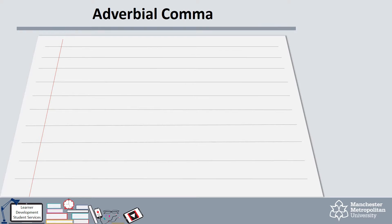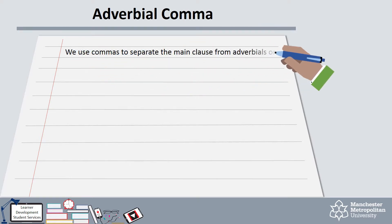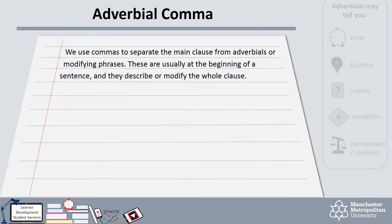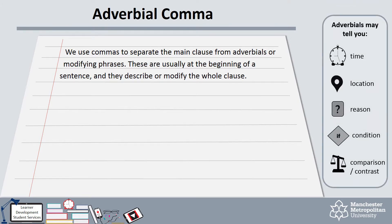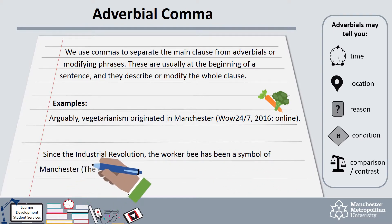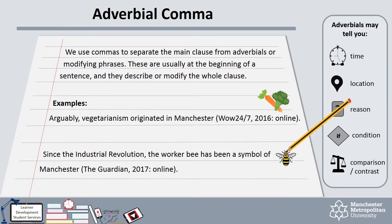The adverbial comma helps to separate the main part of the sentence from a modifying word or phrase. These usually go at the beginning of the sentence to introduce it and can tell us time, location, reason, or condition, or make a comparison or contrast with a previous sentence. For example: arguably, vegetarianism originated in Manchester. The adverbial 'arguably' gives us some context to show that it is a controversial point. Another example: since the industrial revolution, the worker bee has been a symbol of Manchester. This adverbial gives us information about time or how long something has been happening.